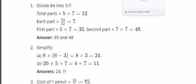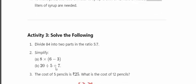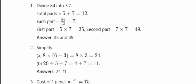Solve the following: 20 divided by 5 plus 7. First, divide: 20 divided by 5 equals 4. Then 4 plus 7 equals 11. So the answer is 11.